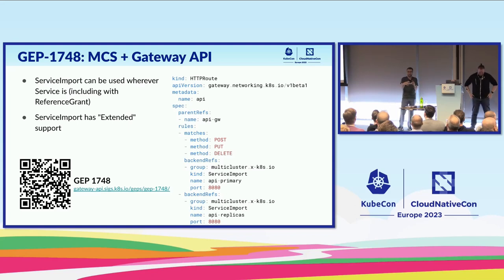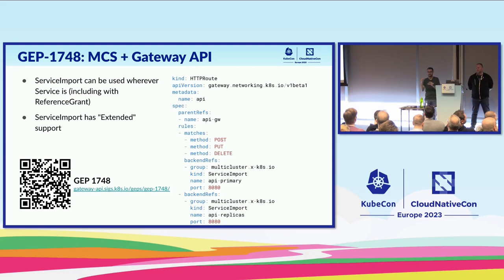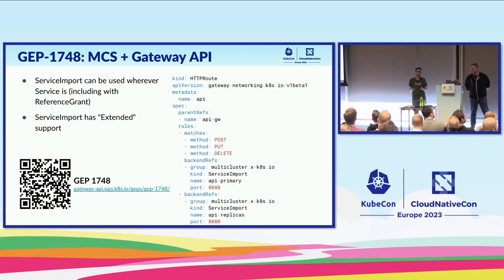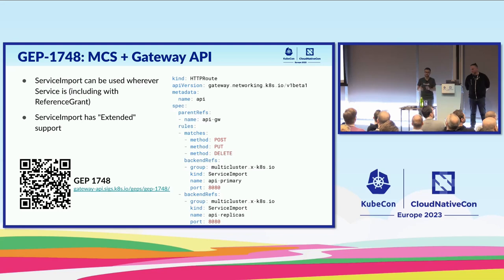There's a GEP that talks about all the nuance in how implementations should handle multicluster services. In this simple example, an HTTP route sends all write requests — POST, PUT, or DELETE — to the API primary multicluster service, and any other request regardless of method goes to the API replicas. You can imagine a read-write replica setup — this is one way you could do that.